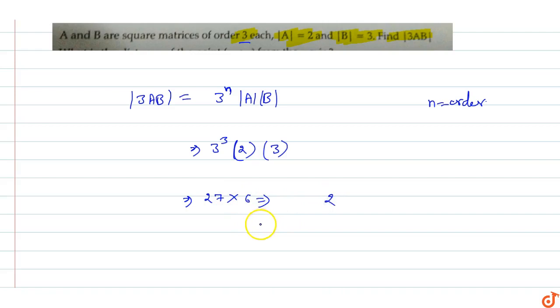This gives us 162. So the value of |3AB| equals